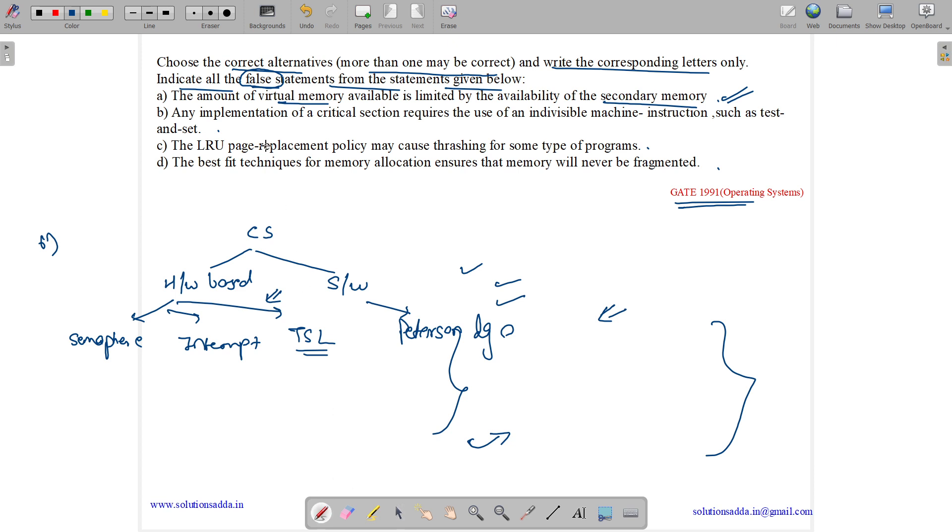Because the option is saying any implementation requires the use of indivisible machine instruction. But Peterson does not require any support from hardware. So this option is false.